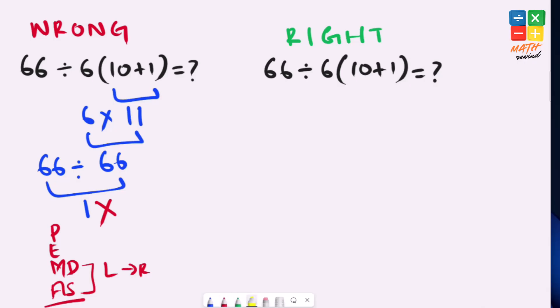Now let's rewind and solve this equation the right way. If you notice in this equation, we have parenthesis, and parenthesis takes highest priority according to the rules. So we'll solve what we have inside parenthesis. We have 10 plus 1, which equals 11.